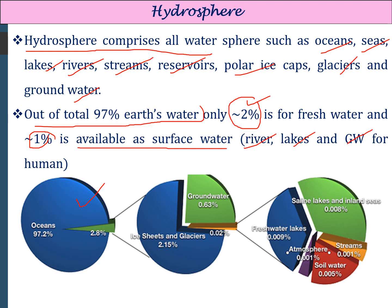The remaining freshwater consists of saline lakes, inland areas, stream water, atmospheric water vapour, and soil moisture. We can see how little freshwater is actually available for human use, so we need to be concerned about the hydrosphere before polluting it.